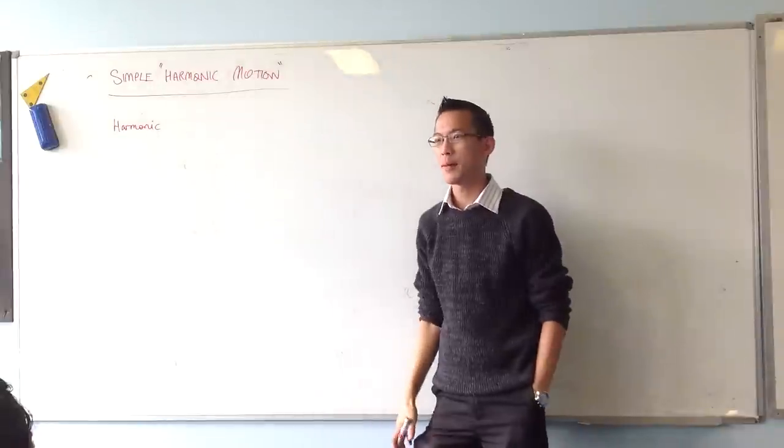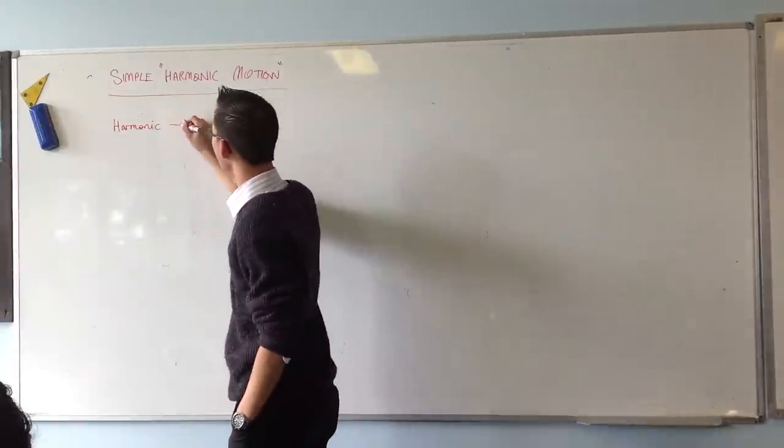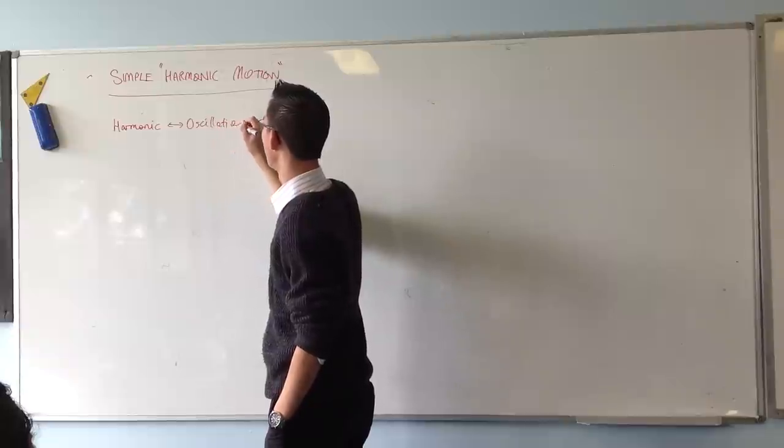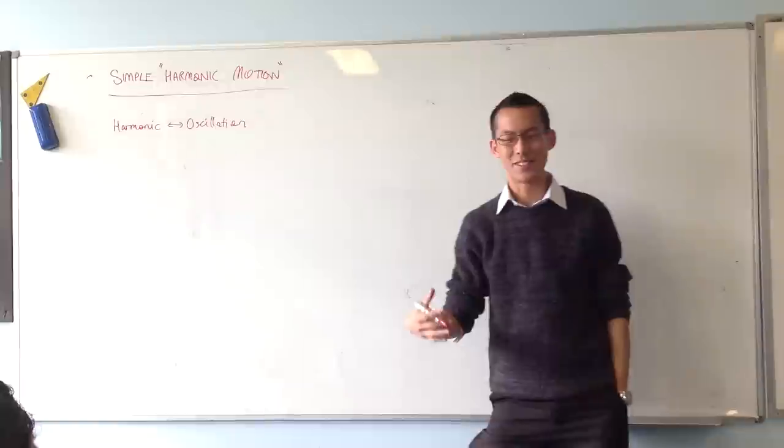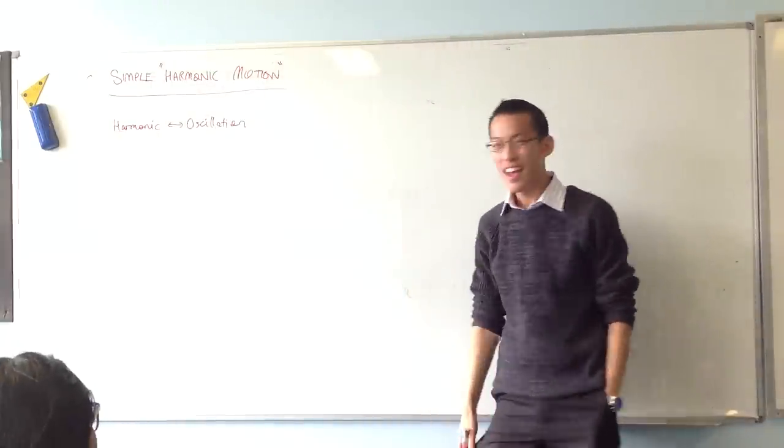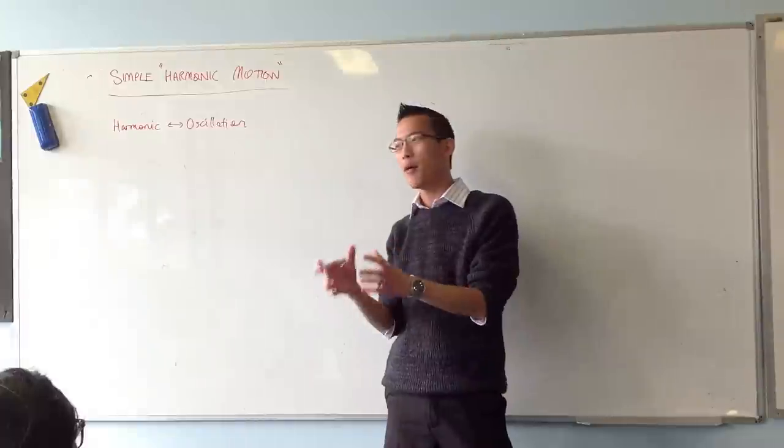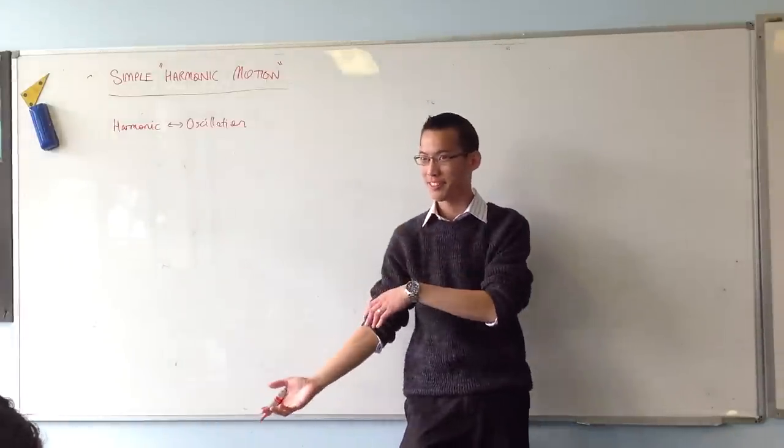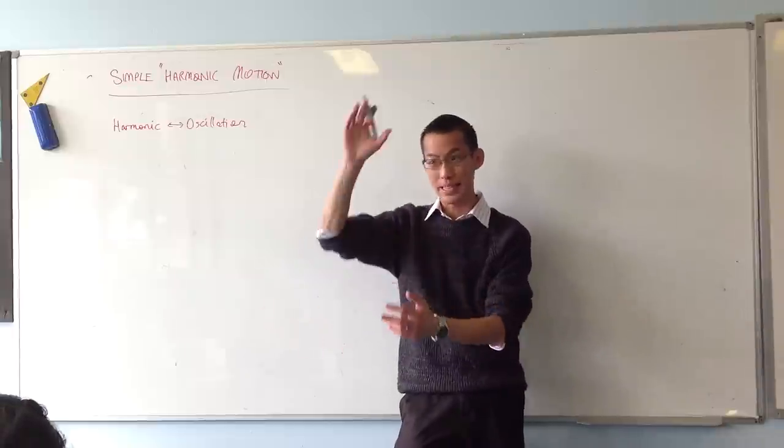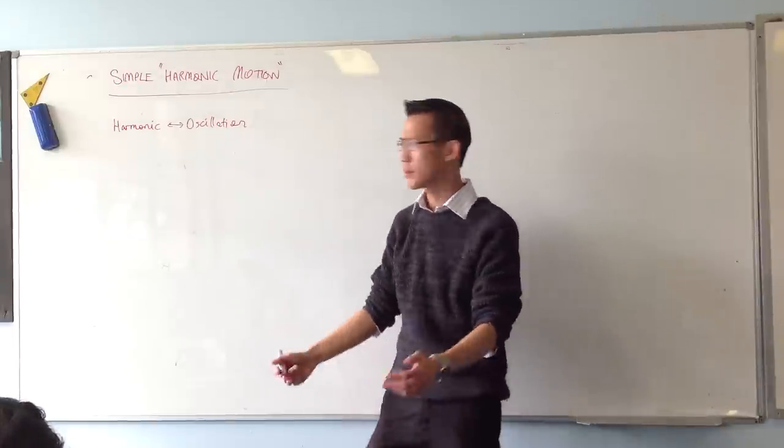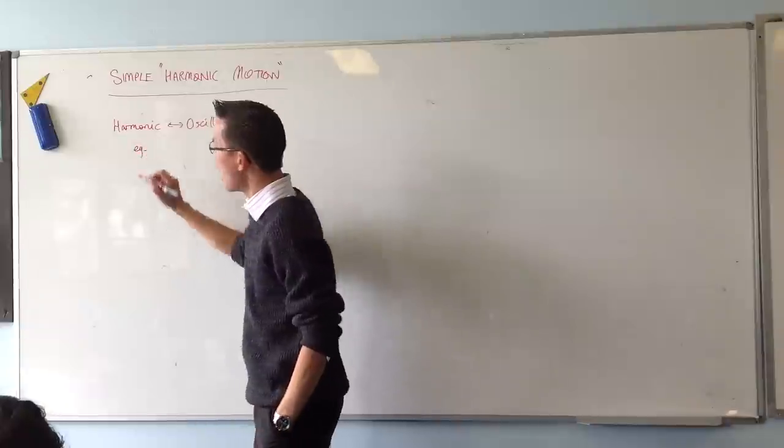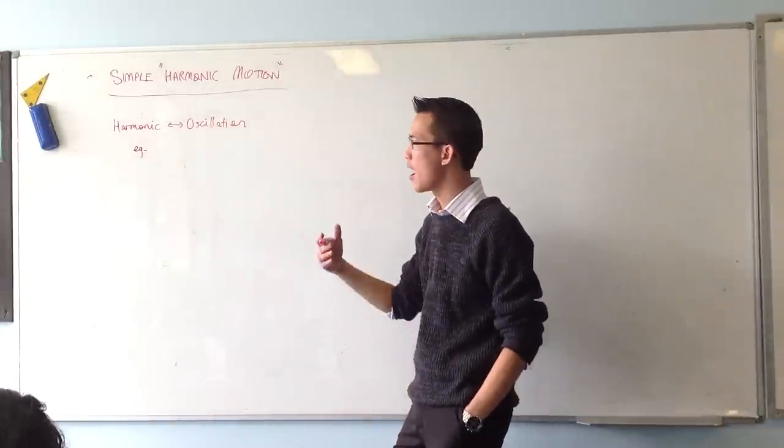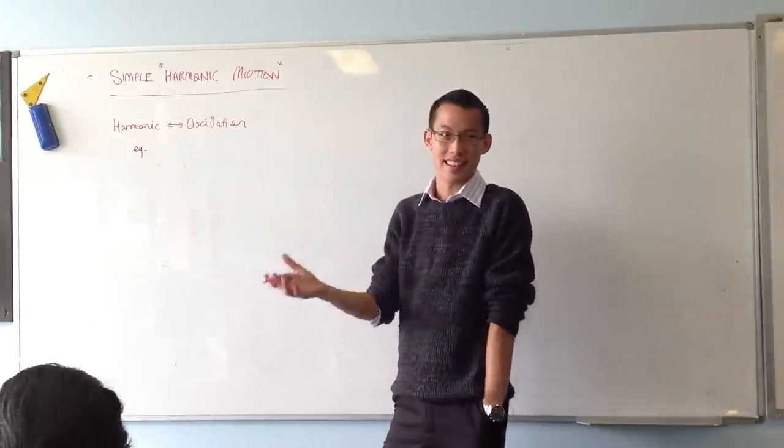The idea is about oscillation. Maybe that's just replacing one confusing word with another, so we're trying to put some more basic English under it. It's wherever you've got some object and its movement is back and forth, back and forth, or up and down, or something like that. So some examples, things that move back and forth.